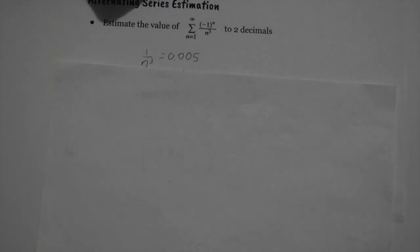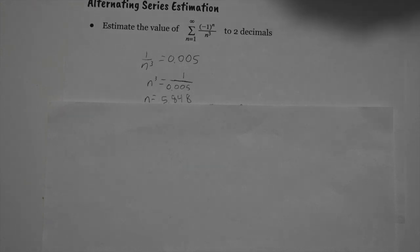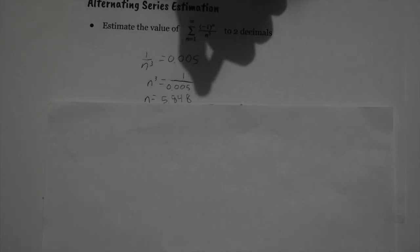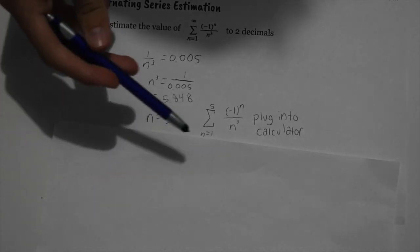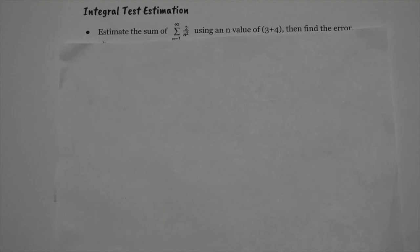For alternating series estimation, we first find how many terms we need to achieve two decimal places of accuracy, meaning the next term must be less than 0.005. Setting the term equal to 0.005 and solving gives n = 5.848. Since 5.8 is not a natural number, we round down to n = 5 — we round down because the next term after n=5 is already within 0.005 of the true value. Plugging into the calculator from 1 to 5 gives approximately −0.90.